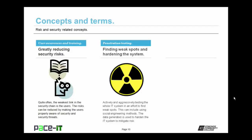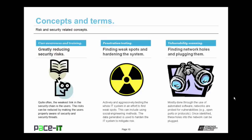Penetration testing is the finding of weak spots and the hardening of systems. It is actively and aggressively testing the whole IT system in an effort to find weak spots. This can include using social engineering methods on your end users to find out if they are your weak link. The data generated is used to harden the IT system in an effort to mitigate future risks. Similar to penetration testing is vulnerability scanning — the finding of network holes and then plugging them. It's mostly done through automated software. Networks are probed for vulnerabilities such as open ports or unnecessary protocols. Remember, you need authorization to perform vulnerability scanning.